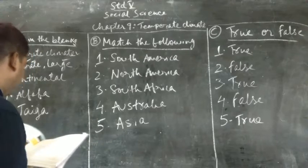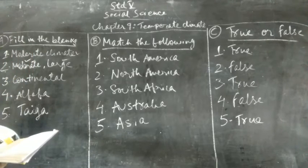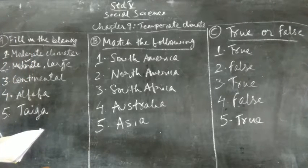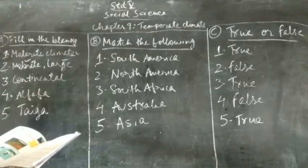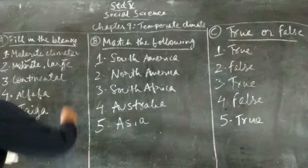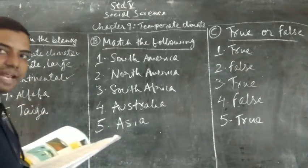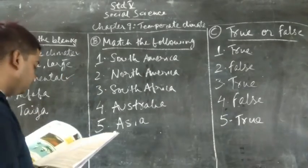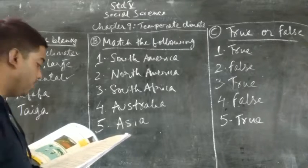Question number 3: In the northern hemisphere, the temperate zone experiences dash type of climate. So the answer is continental type of climate.